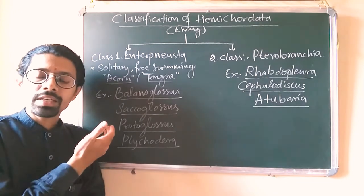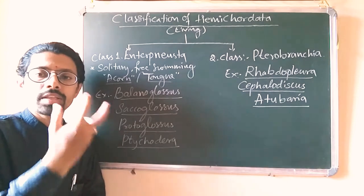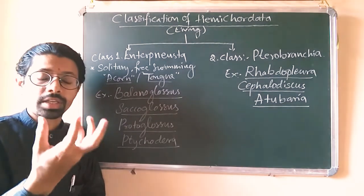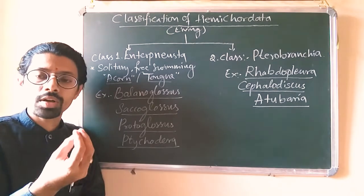Along with that, they have a circulatory system which is open type with dorsal heart. Then they have a protochordate-like characteristic, which is generally not a chord-like structure but it's not a notochord—that is the diverticulum extending into the proboscis.